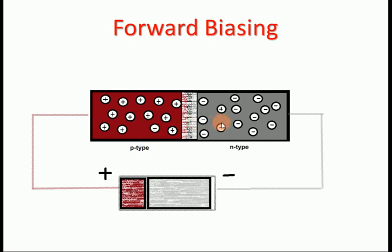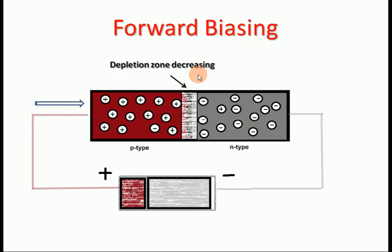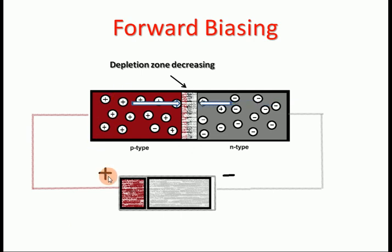If we connect the P-type to the positive terminal of the battery and the N-type to the negative terminal of the battery, that is known as forward biasing. In this type of arrangement, a depletion region is created in the PN junction. When connecting the PN junction in forward biasing, the P-type will feel the positive charge.